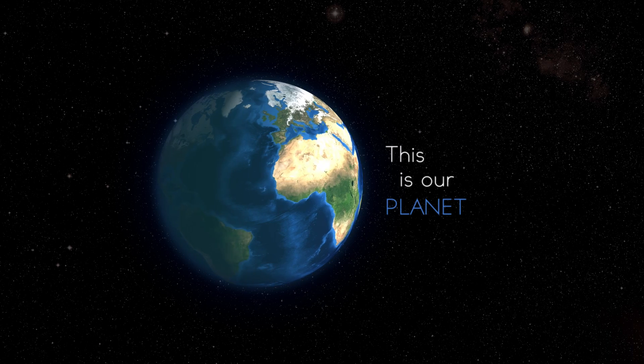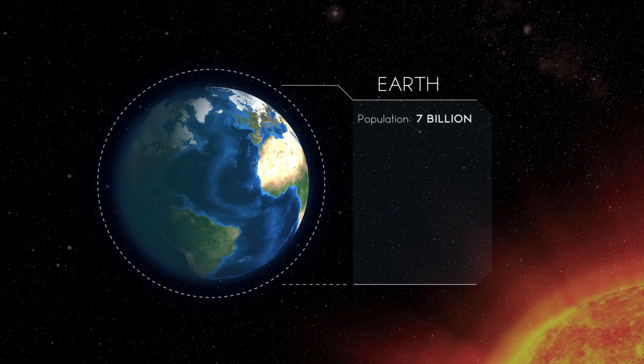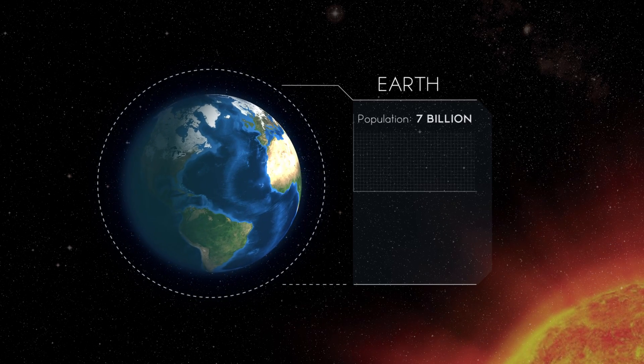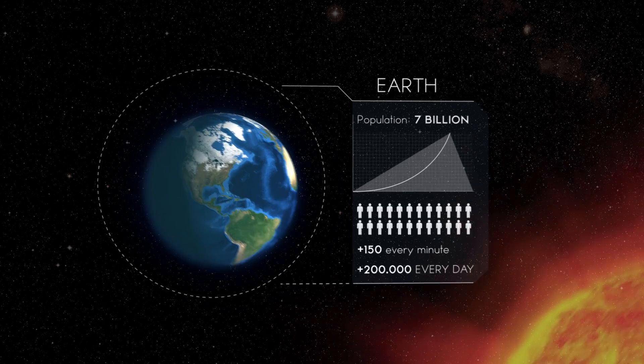This is our planet, Earth. There are 7 billion of us. By the time you've watched this video, our population will have grown by roughly 150. That's 200,000 people every day.